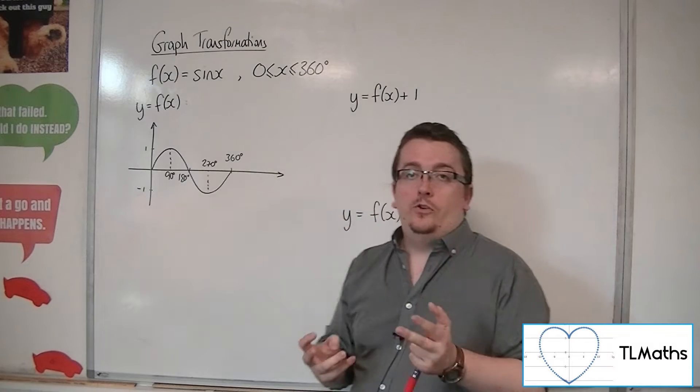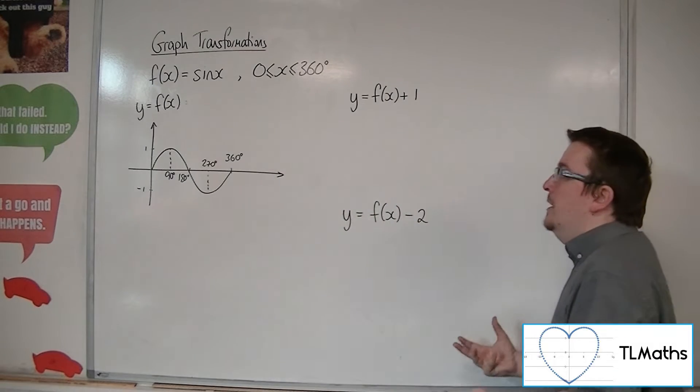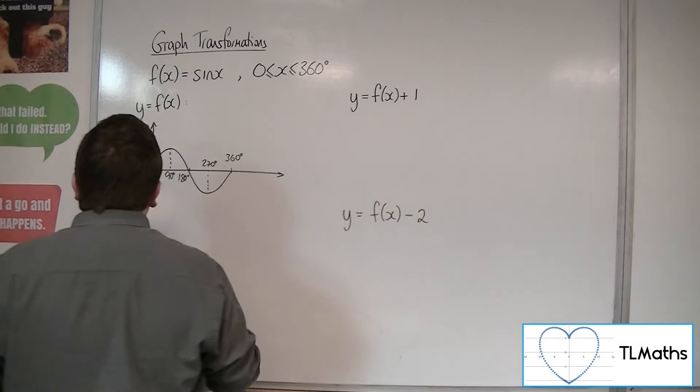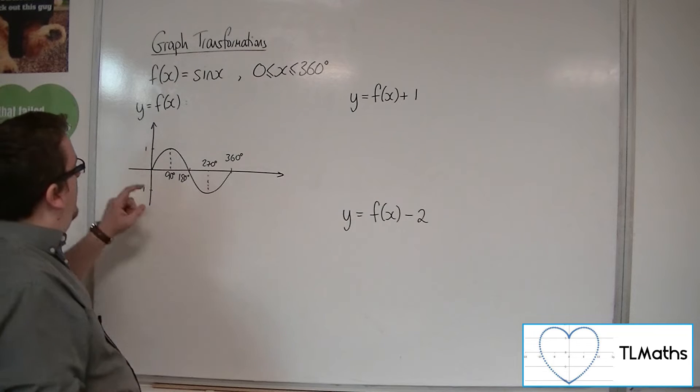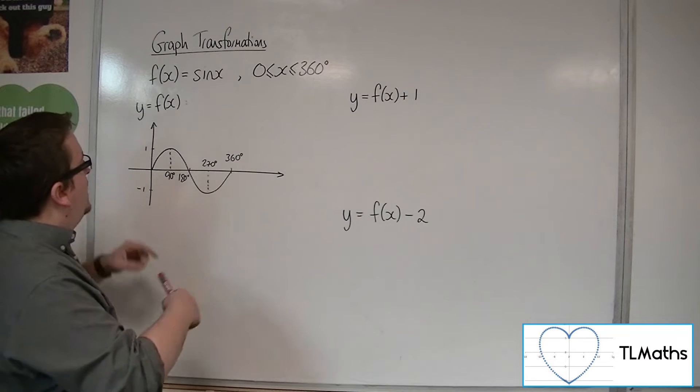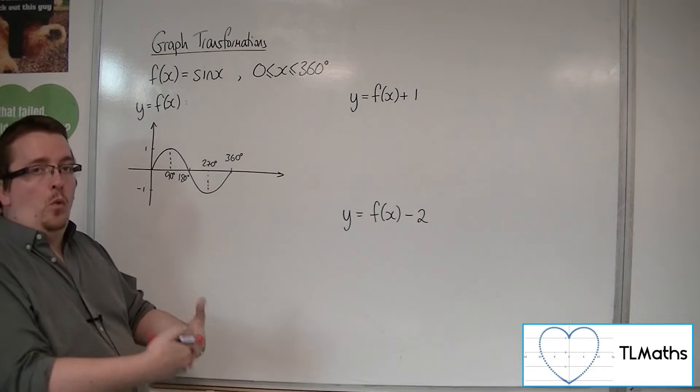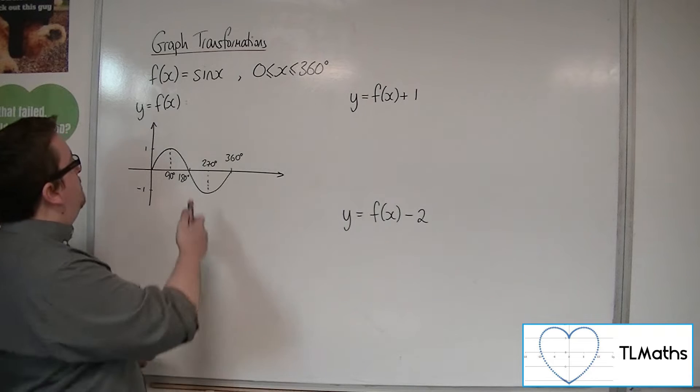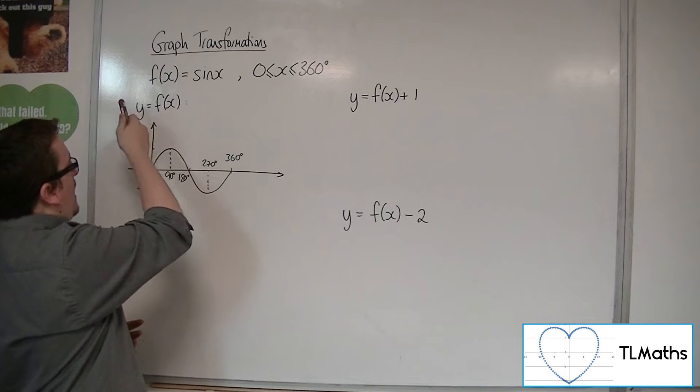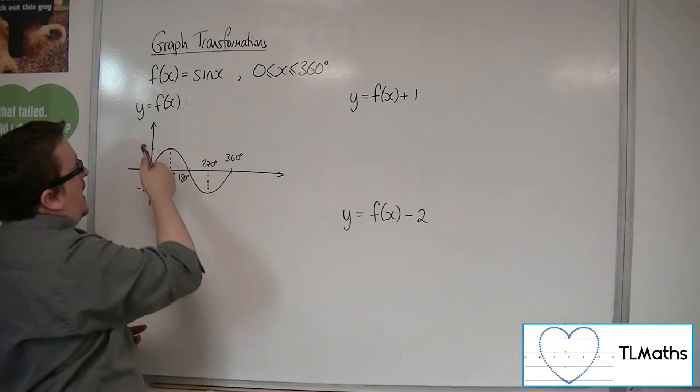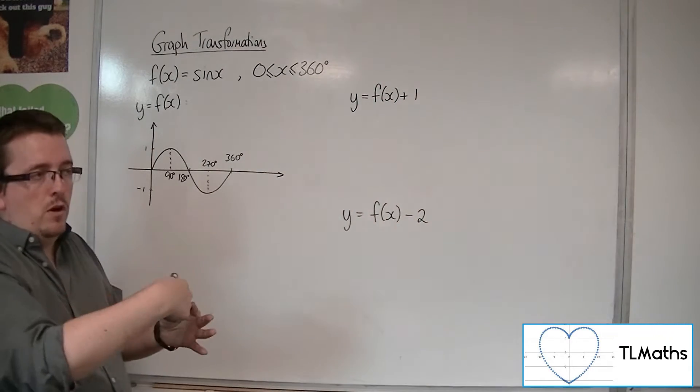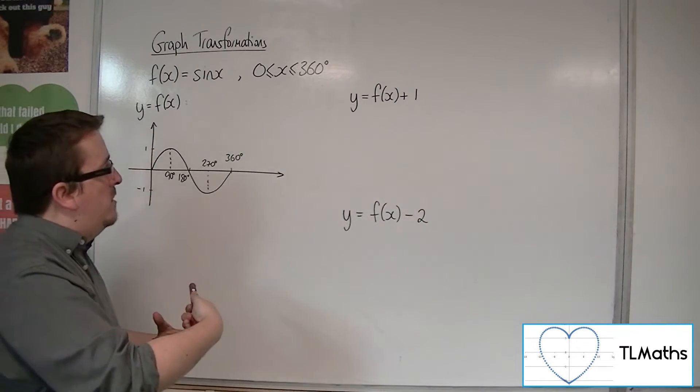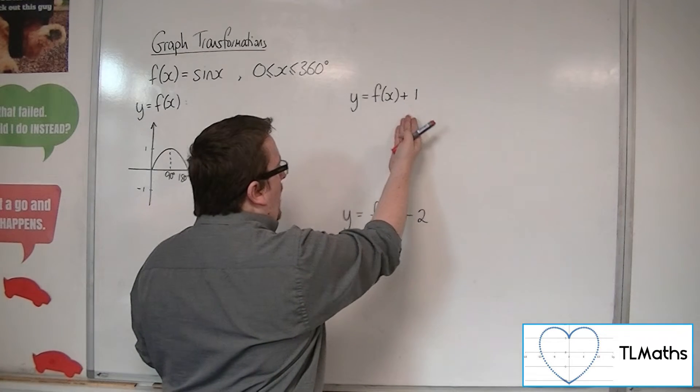So what does it do to our graph? Now, this point here, for example, at 0, 0, because when I'm putting in x is 0, I'm getting y is 0. So I put in x is 0, I get y is 0. If I'm putting in x is 0 into this, and f of x is 0 when x is 0, then y will be 1.